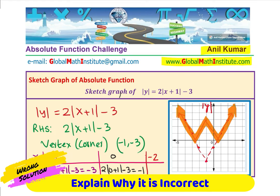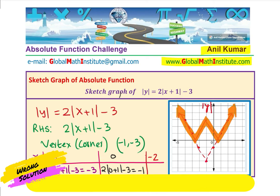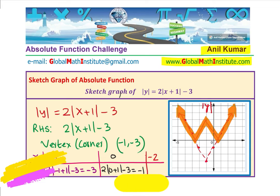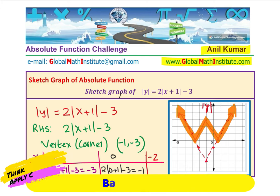Since we are looking at absolute value of y on the left-hand side, just as when you sketch absolute value of x you treat it as a piecewise function, we now know that something is missing from the flip approach. Let's identify that missing link and look at the correct solution.